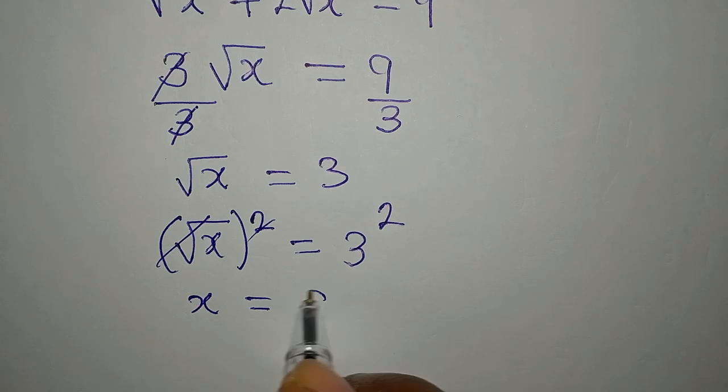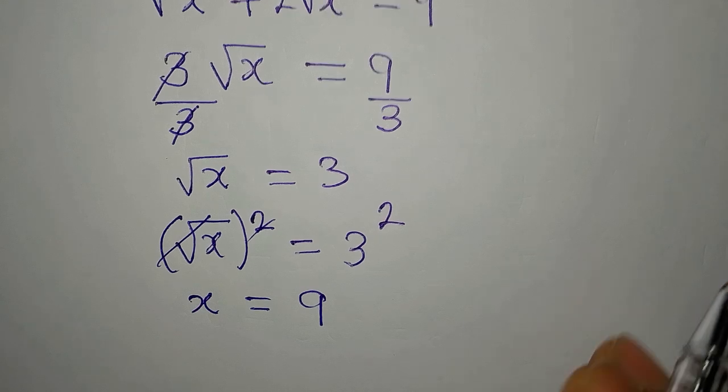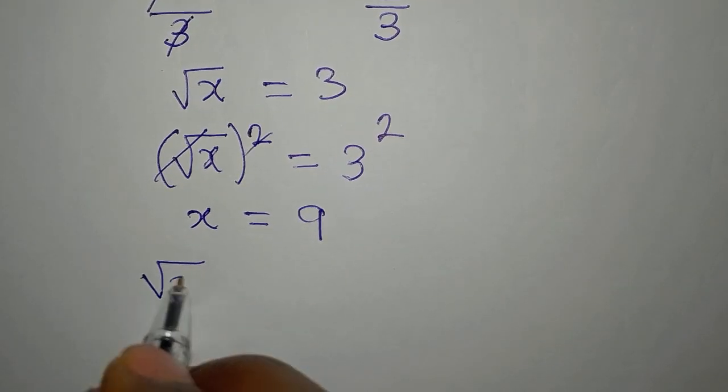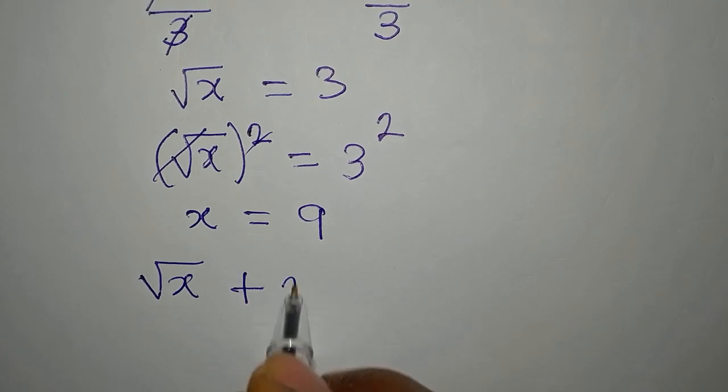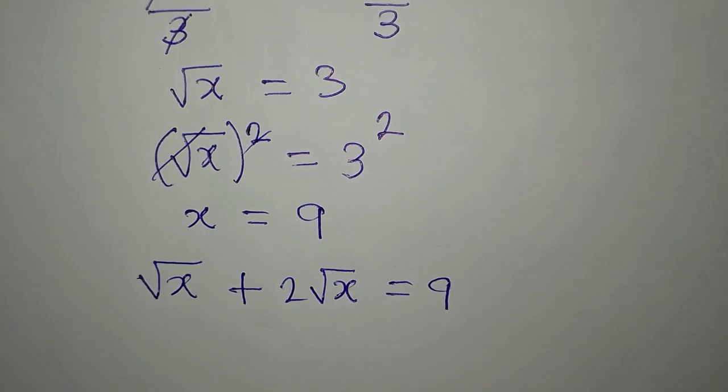Now this is going with this. So our x will be equal to 9 because 3 squared is 3 times 3 and it is 9. Now what if we put this into this equation, square root of x plus 2 square root of x equals 9?